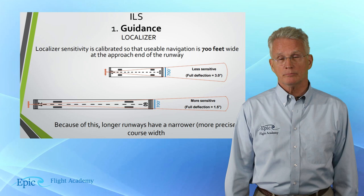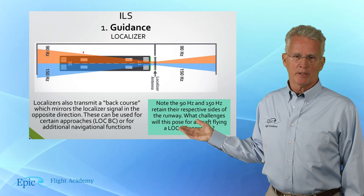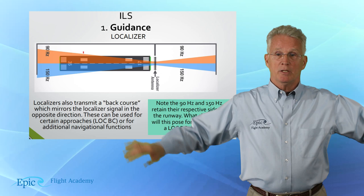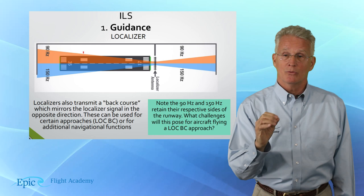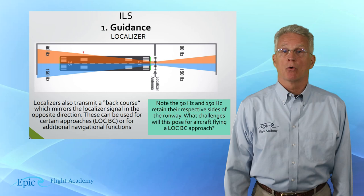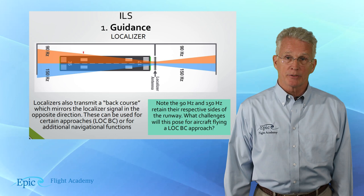In this diagram you can see that localizers also transmit what is called a back course. That localizer antenna transmits in both directions, so the localizer signal from the other direction can be used for an approach — it's called the back course or a localizer back course approach. I want you to go into detail with this with your flight instructor.